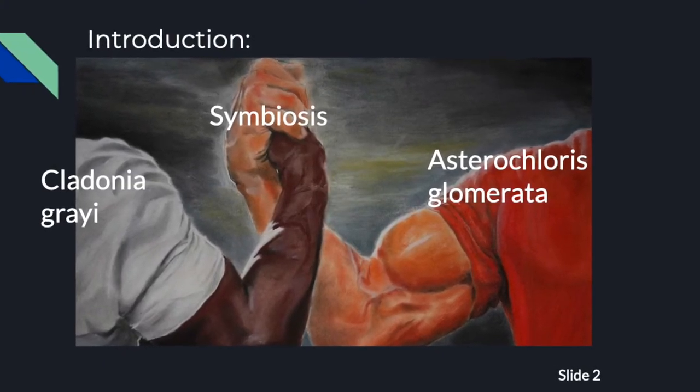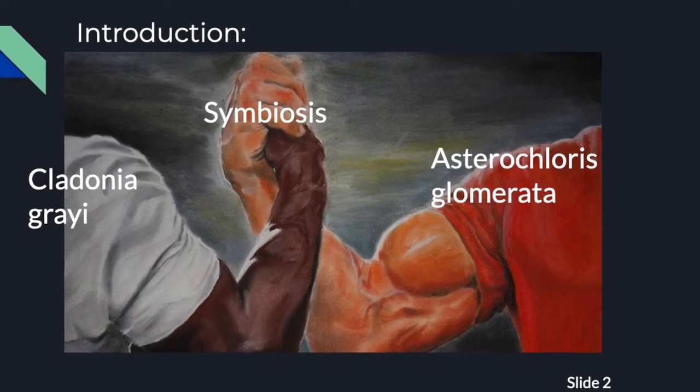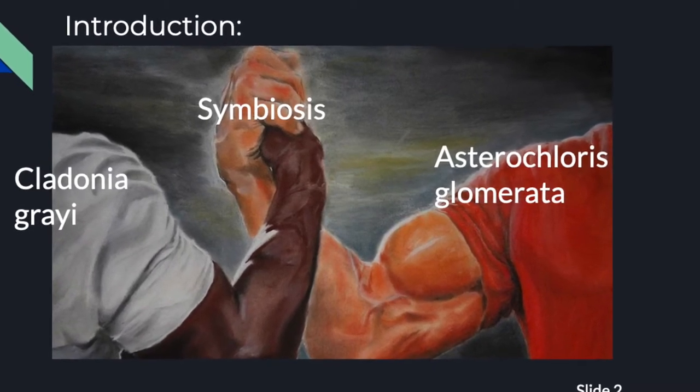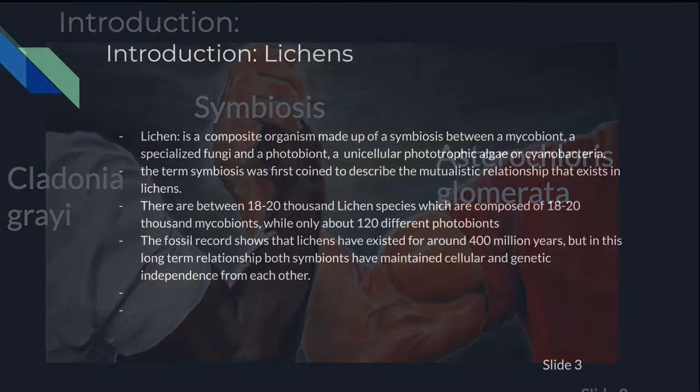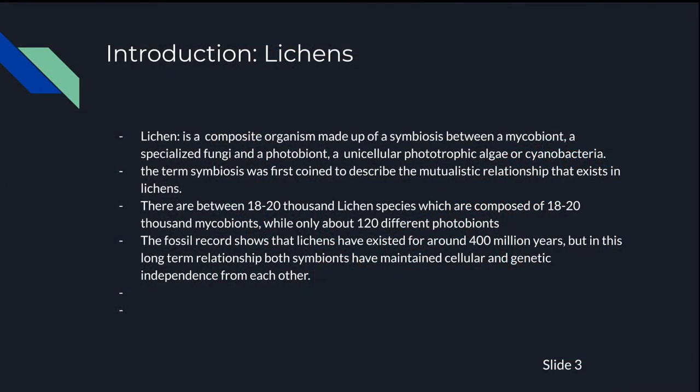Here is some background info on lichens for anyone who might not know exactly what a lichen is and that includes myself. So, a lichen is a composite organism made up of a symbiosis between a mycobiont which is a specialized fungi and a photobiont which is a unicellular phototrophic algae or cyanobacteria. Even the word symbiosis was first coined to describe the mutualistic relationship that exists in lichens.